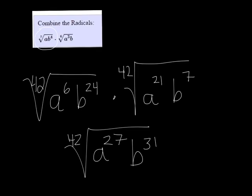And then we want to check and make sure we can't simplify it. Even though 27 and 42 both have a common factor of 3, 31 does not. So we can stop there since there's no way to simplify it.